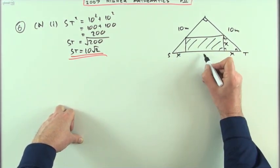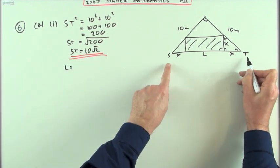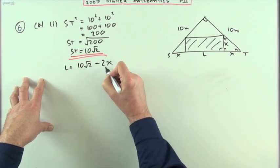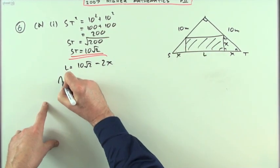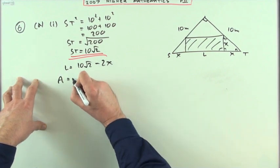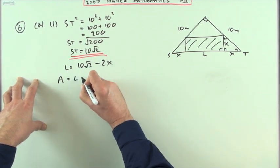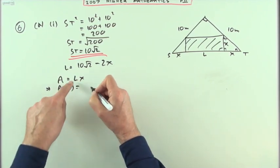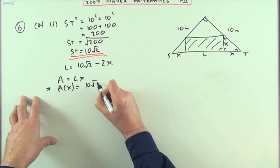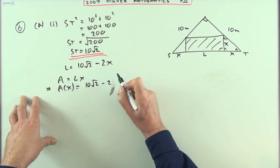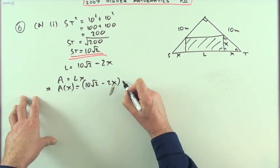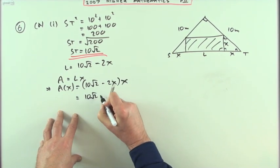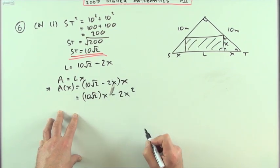So the length of the decking would have to be the length of ST, which was 10 root 2, minus two lots of x. So the area you're looking for, which would be length times breadth, which would be L times x, expressed just in terms of x, means replace the L by that—would be 10 root 2 minus 2x multiplying x, which gives you 10 root 2x minus 2x squared, as required.